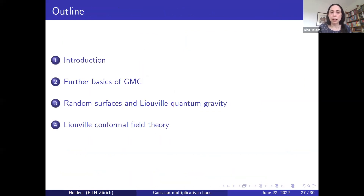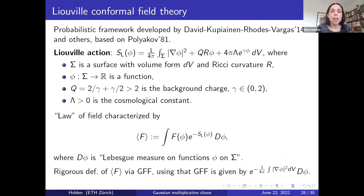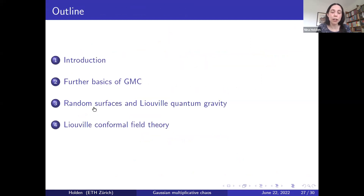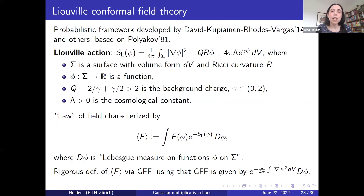I will now present Liouville Conformal Field Theory. I want to present a probabilistic framework initiated in work by David, Kupiainen, Rhodes, and Vargas, later developed by these and several others. Their approach is inspired by work of Polyakov from 1981, which was also a big inspiration for the third part of the talk on random surfaces and LQG. To introduce Liouville CFT, I first define the Liouville action, given by a formula involving a surface sigma with volume form dV and Ricci curvature R, a real-valued function phi on sigma, background charge Q, the parameter gamma between zero and two, and a strictly positive cosmological constant lambda.